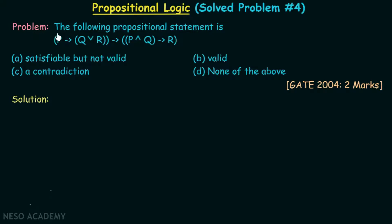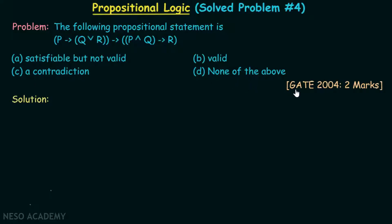Let's consider this problem. The following propositional statement is: p implies q, or r implies p, and q implies r. Is it satisfiable but not valid? Is it valid? Is it a contradiction? Or is it none of the above? This question was asked in GATE 2004 for two marks.